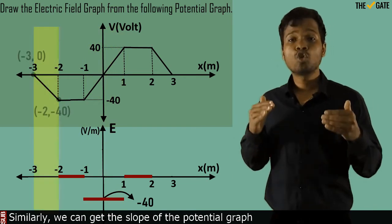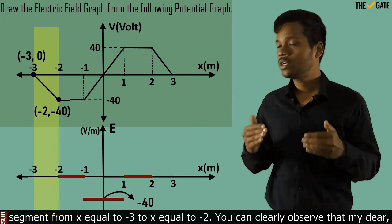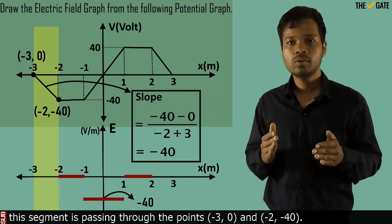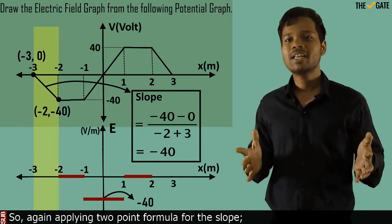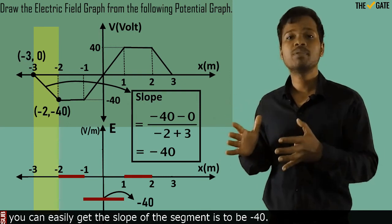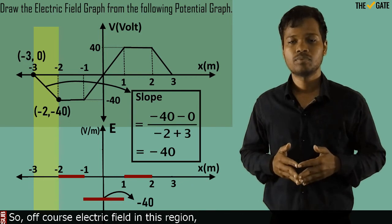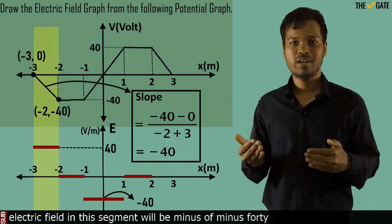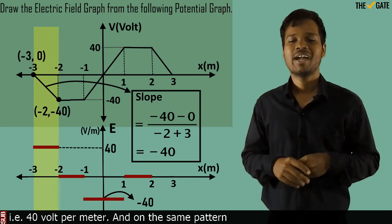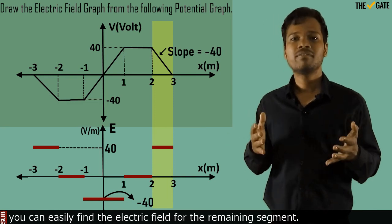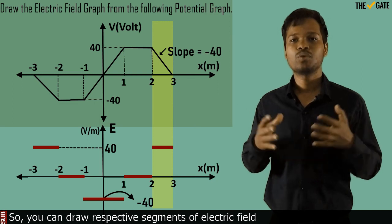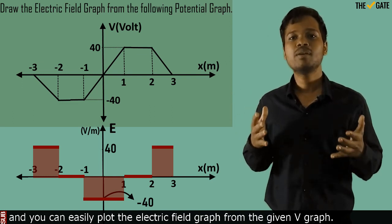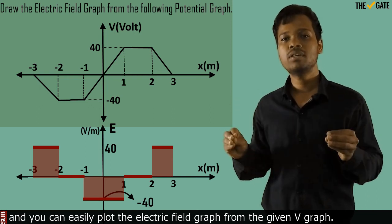Similarly, we can get the slope of the potential graph segment from x = -3 to x = -2. This segment passes through the points (-3, 0) and (-2, -40). Applying the two-point formula for the slope, the slope of this segment is -40. So the electric field in this region will be -(-40), that is 40 volt per meter. On the same pattern, you can easily find the electric field for the remaining segments and draw the respective electric field graph from the given V graph.